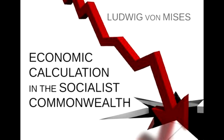It would simply stand perplexed before the problems of management and location. It is an illusion to imagine that in a socialist state calculation in natura can take the place of monetary calculation. Calculation in natura, in an economy without exchange, can embrace consumption goods only. It completely fails when it comes to dealing with goods of a higher order. And as soon as one gives up the conception of a freely established monetary price for goods of a higher order, rational production becomes completely impossible. Every step that takes us away from private ownership of the means of production and from the use of money also takes us away from rational economics.